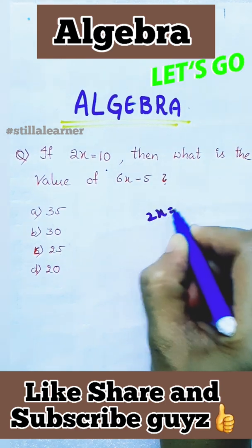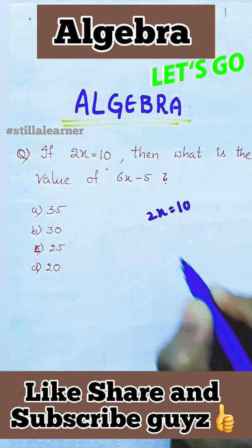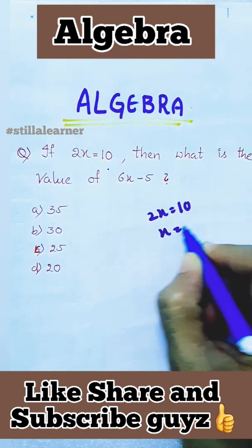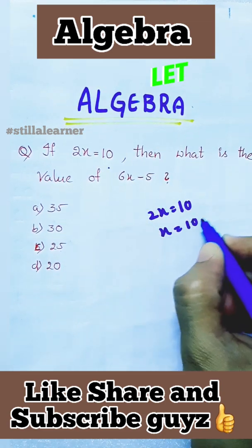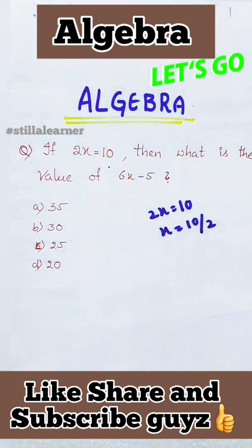For that, we have to do 2x equals 10. It is given, so from that we will take 10. This goes in divide, we get x value is 5, right?